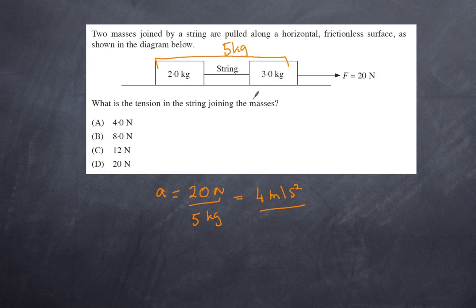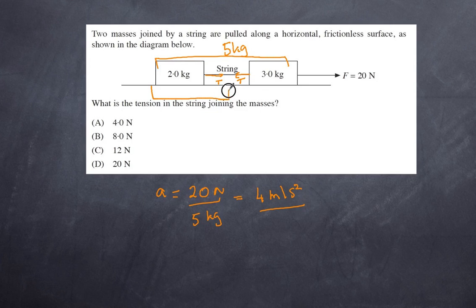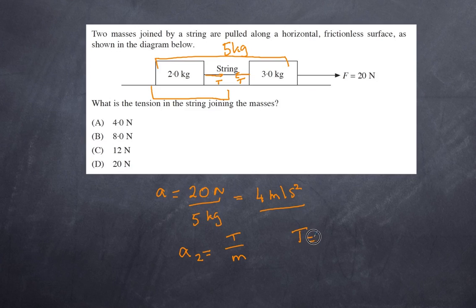Both masses are accelerating at four meters per second squared. The two kilogram mass is only experiencing force due to the string tension. The acceleration of our two kilogram block equals the tension divided by its mass. We already established the acceleration as four meters per second squared, so tension equals mass times acceleration — two kilograms multiplied by four meters per second squared — giving a grand total of eight newtons. B is our answer.